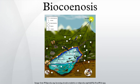A biocoenosis, coined by Karl Möbius in 1877, describes the interacting organisms living together in a habitat. In the paleontological literature, the term distinguishes life assemblages, which reflect the original living community, from death assemblages. Of course, no paleontological assemblage will ever completely represent the original biological community. The term thus has somewhat different meanings in a paleontological and an ecological context.